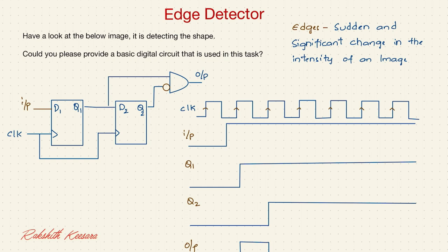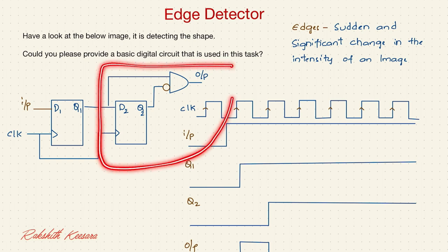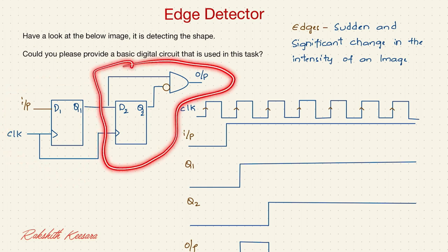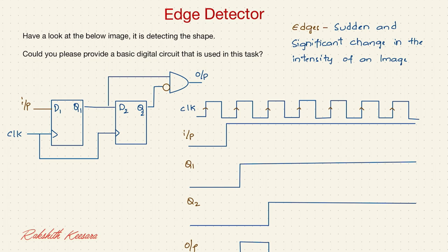Now this is detecting our edge. So what is the procedure we followed? First check whether the input is synchronized with the clock or not. If yes, directly apply this circuit. If no, make it synchronized with the clock. Then apply this circuit. So this is the way we detect an edge.